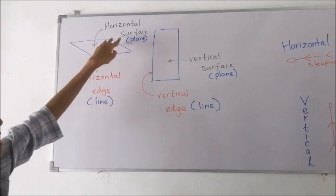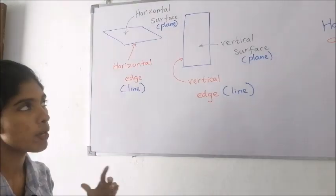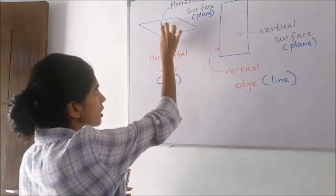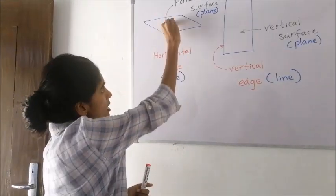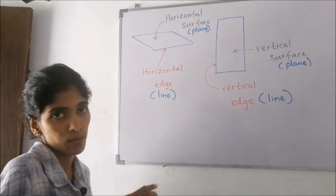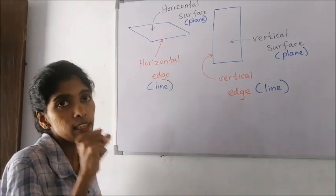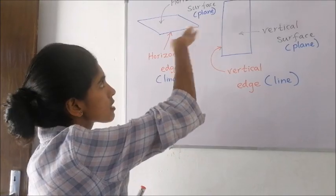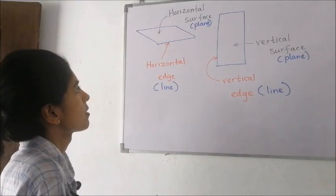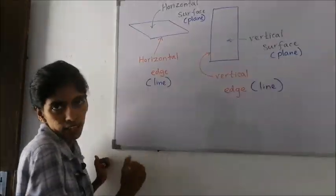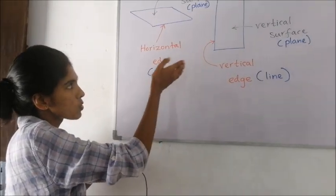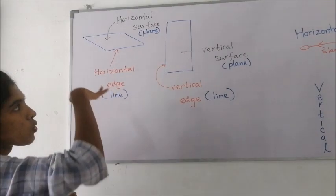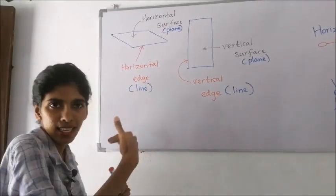In the exam papers, if you are given to mark a horizontal surface, the arrowhead should point to the surface in the middle — not to the lines, because those are edges. Clearly mark the edges and the surfaces. So this is a horizontal surface, also called a horizontal plane. And here I have marked a sleeping edge, which is a horizontal edge or horizontal line.